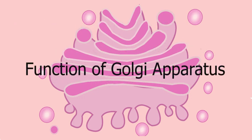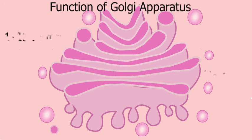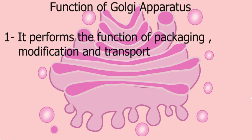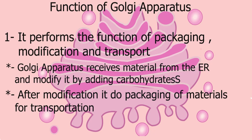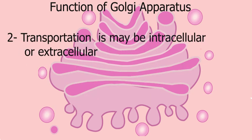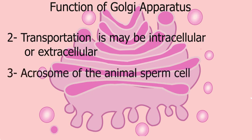Functions of Golgi apparatus: it principally performs the functions of packaging, modification, and transport. Golgi apparatus receives material from the endoplasmic reticulum, then modifies it by adding carbohydrates. After modification, it packages the material for transportation, which may be intracellular or secreted out of the cell.